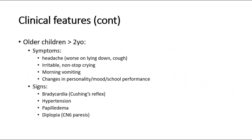For older children more than two years old, the clinical features are slightly different. They may complain of headache, which is worse on lying down or coughing, due to increased intracranial pressure. They might present as irritable with non-stop crying, vomiting in the morning, or changes in personality, mood, or school performance. Signs to note include bradycardia, hypertension, papilledema if present for a long time, and diplopia due to cranial nerve 6 paresis.